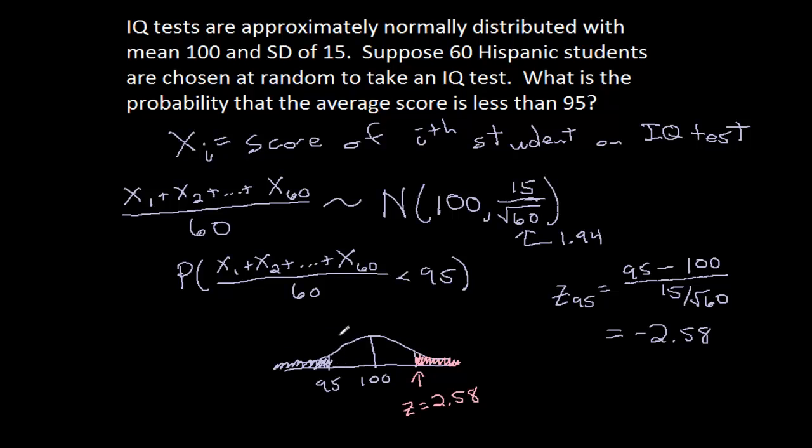And what 0.9951 is talking about is this entire area. So this peach colored area over here is 1 minus 0.9951, which is 0.0049. So this area over here is also 0.0049, and that's our probability.